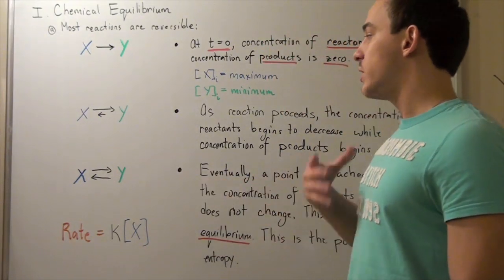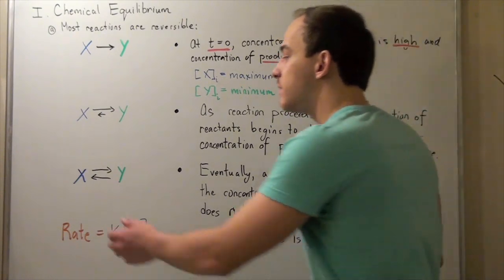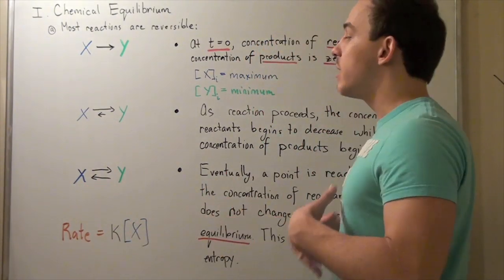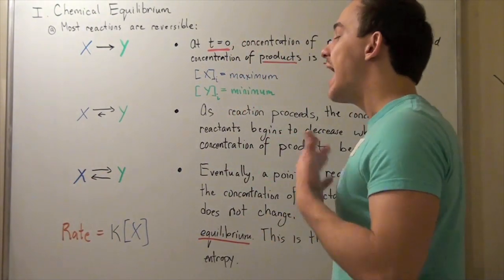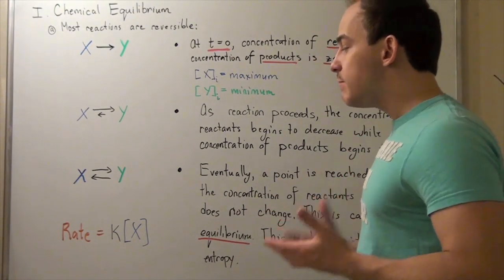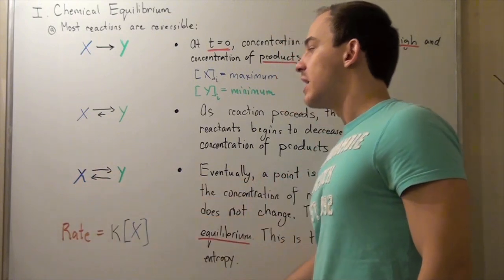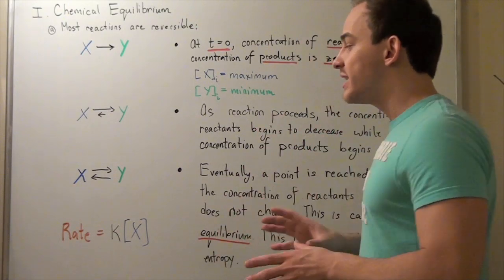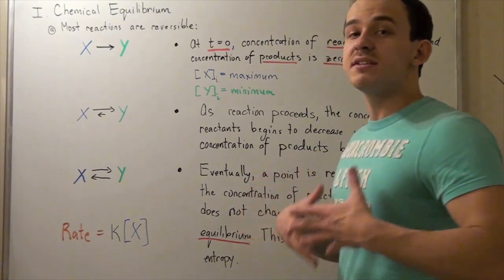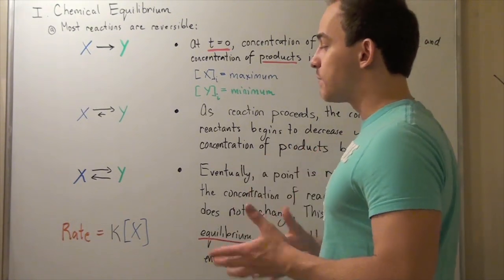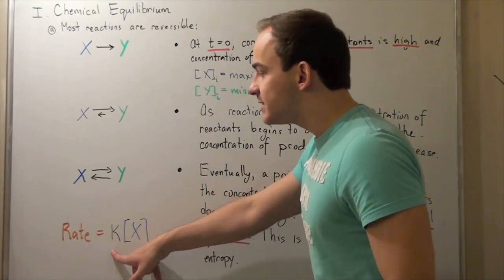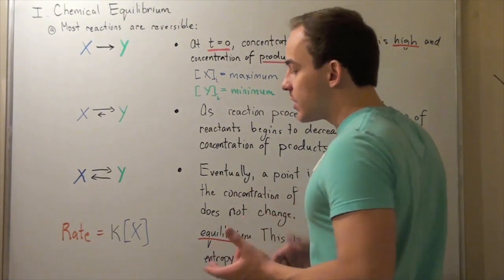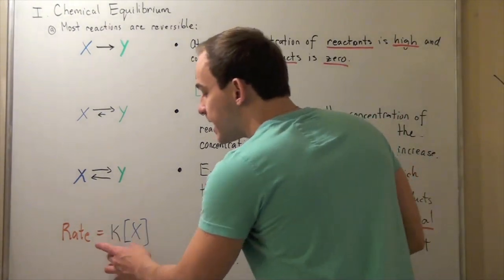Eventually, the concentrations of X and Y at equilibrium will be exactly constant. They won't necessarily be the same as each other, but they will be constant — the concentration of X will not change and the concentration of Y will not change. That means the rate of the reverse reaction and the rate of the forward reaction will be the same. It's important to understand that the concentrations of X and Y at equilibrium do not need to be equal; the rates are equal because the rate constants for the forward and reverse reactions are different values, and the k's balance the rates out.